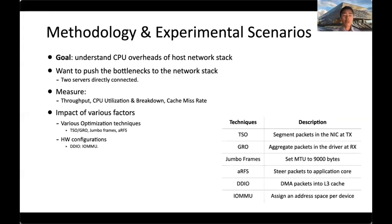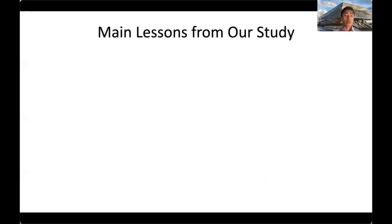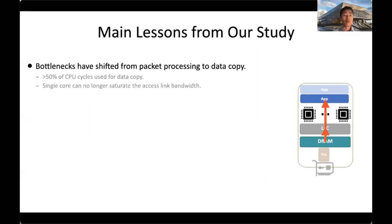To address this new challenge, the community has been exploring potential solutions including Linux kernel stack optimizations, RDMA hardware offloads, and user-space stacks. The design space exploited by all these solutions benefits from a detailed understanding of today's network stack overheads. Providing such an understanding is the goal of this work. Our study resulted in several interesting takeaways departing from conventional wisdom: first, data copy is the primary bottleneck, with over 50% of all CPU cycles at the receiver spent in data copy.